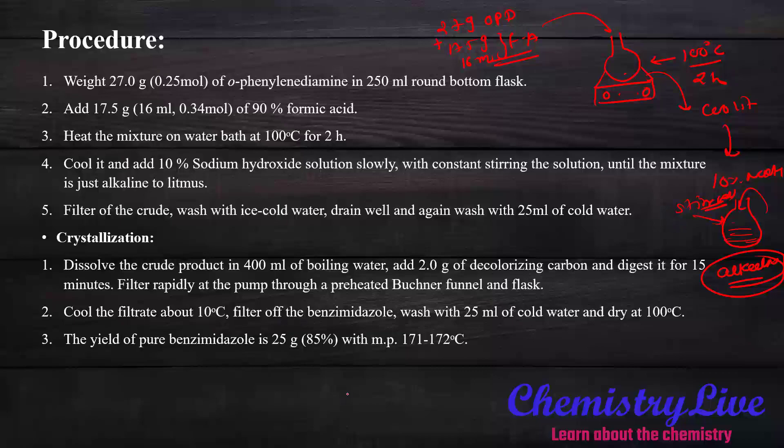Filter the crude, wash with ice cold water, and wash with 25 ml cold water. In the crystallization process, boil 400 ml water, add 2 grams of carbon or animal charcoal, then add the crude compound. Digest it for 15 minutes, then filter it. Put it at 10 degrees centigrade temperature. We will get benzimidazole crystals immediately. Wash with 25 ml cold water and dry at 100 degrees temperature. We will get 25 grams of compound.